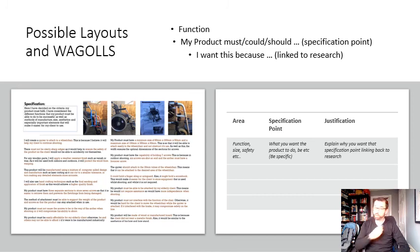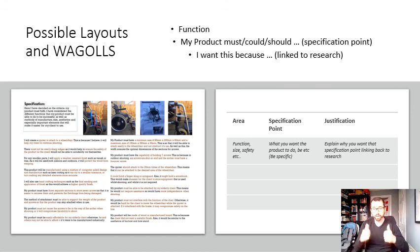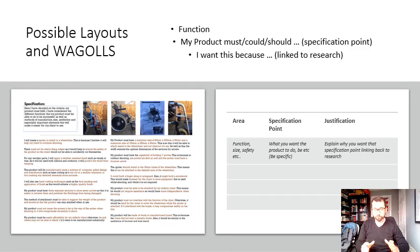That is how to write a design specification — separating out the specification points and the justification. Both, if done well, will get you really high marks. You can't get into the high marks without justifying your points, so make sure you link it back to your research. Hope you've enjoyed this session, and hopefully some of you are now considering becoming Lincoln City fans. Take care and look forward to our future lessons.